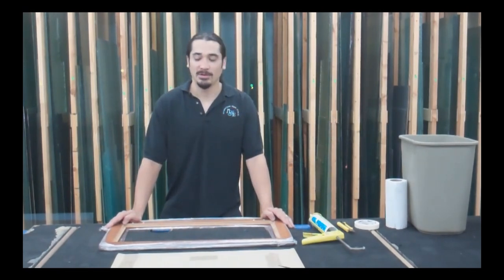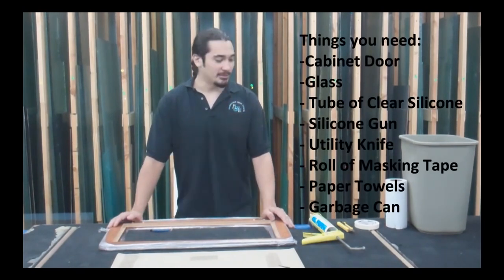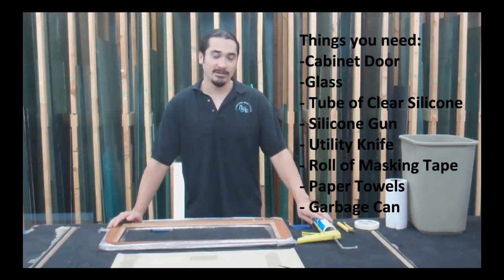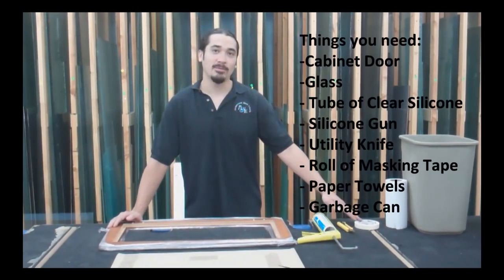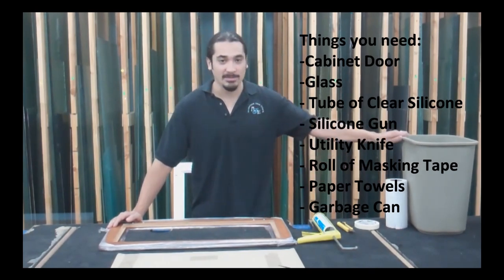Before we get started, make sure that you have your cabinet door and your glass, a tube of clear silicone and a silicone gun, a utility knife, a roll of masking tape, a roll of paper towels, and make sure that you have a garbage can nearby.